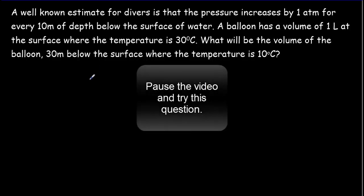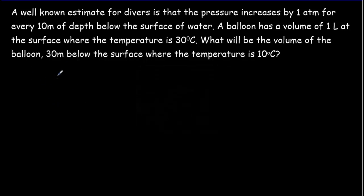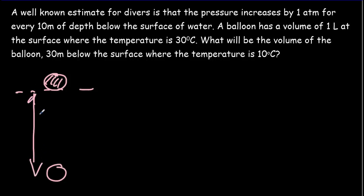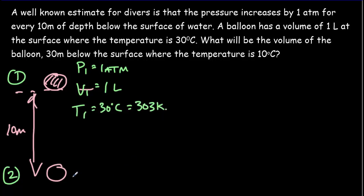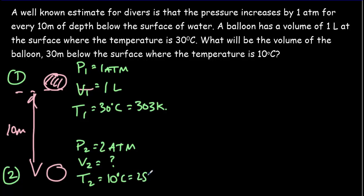Now a word problem about a balloon that is first above the surface and then 10 meters below the surface. State 1 is above the surface: P1 = 1 atmosphere, V1 = 1 liter, T1 = 30°C = 303 Kelvin. In state 2 below the surface: P2 = 2 atmospheres (pressure increases by 1 atmosphere every 10 meters), V2 is what we want to find, and T2 = 10°C = 283 Kelvin.